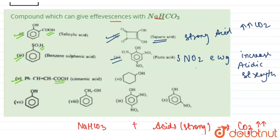So picric acid which has 3NO₂ groups that are electron withdrawing groups, which increase acidic strength. So it will also give.